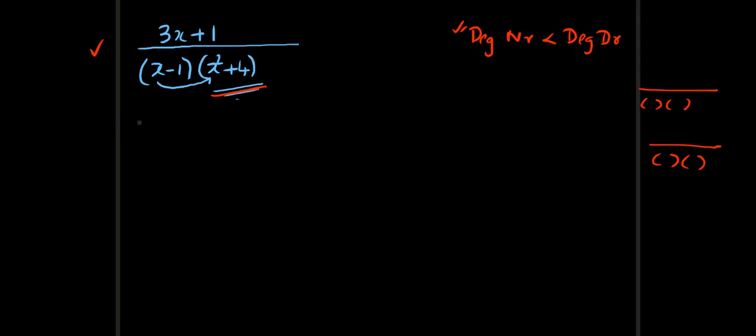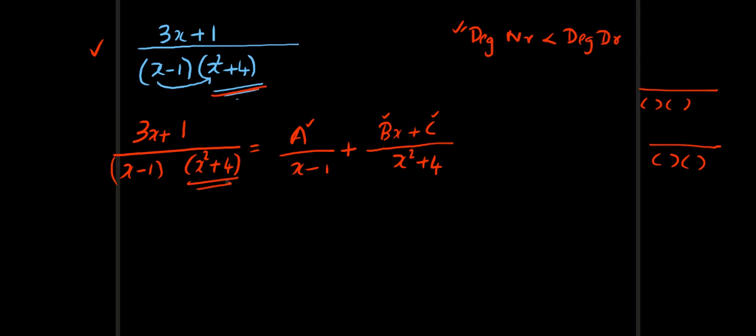So the method is assume 3x plus 1, the whole divided by x minus 1 into x minus 1 plus, for the quadratic factor, I need the next two alphabets. And that will be bx plus c, the whole divided by x square plus 4. Now my job is to find a, b, and c. Remember, whenever you have a quadratic factor in the denominator which cannot be factorized, be ready with two alphabets and put the linear term on the top. That's it.